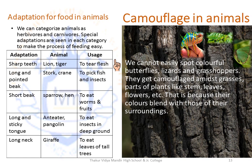Camouflage in animals is basically their ability to blend in or merge with the surroundings. Colorful butterflies, lizards and grasshoppers get camouflaged amidst grasses and parts of plants like stems, leaves and flowers, because their colors blend in with those of their surroundings.